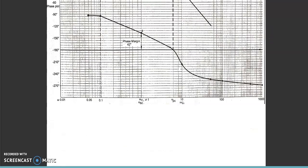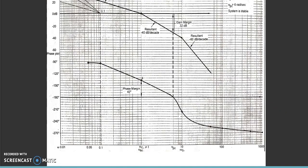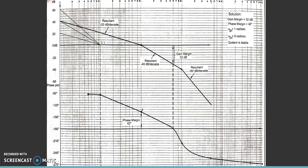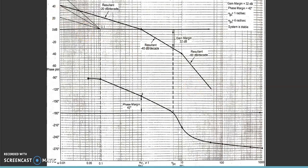I will use a roller scale for marking the parallel lines. If I want a 40-degree slope from 1 to 10, I will draw a parallel line to the reference using the roller scale, and like that you can draw the phase plot and magnitude plot.